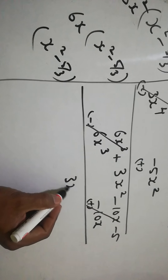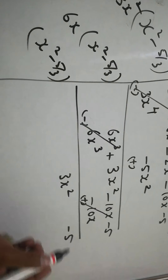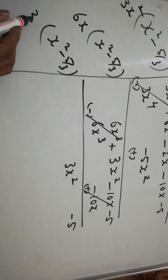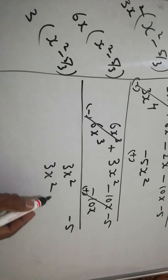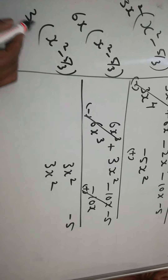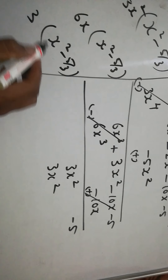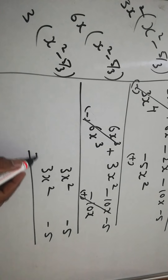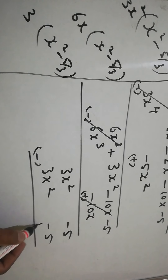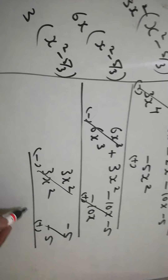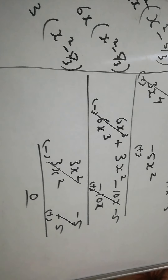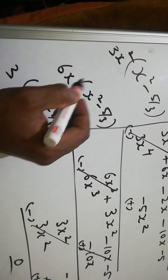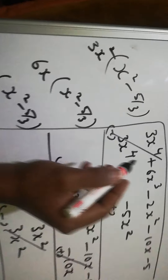Next, bring down 3x² - 5. Multiply x² - 5/3 by 3: 3 times x² is 3x², and 3 times (-5/3) gives -5, the 3s cancel. We change the sign and get remainder 0. So the quotient is 3x² + 6x + 3, written on top.